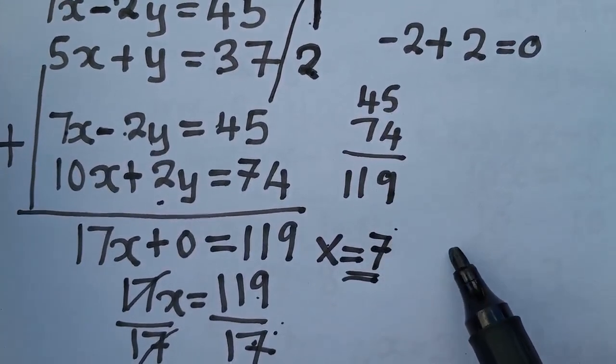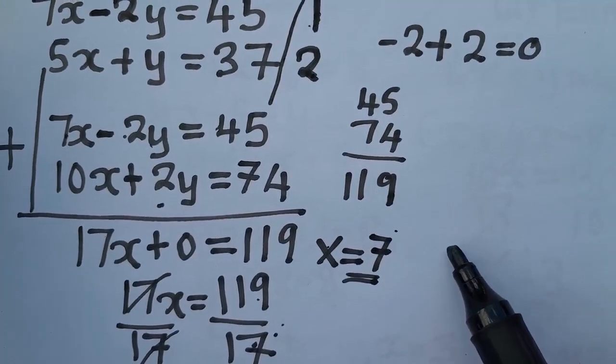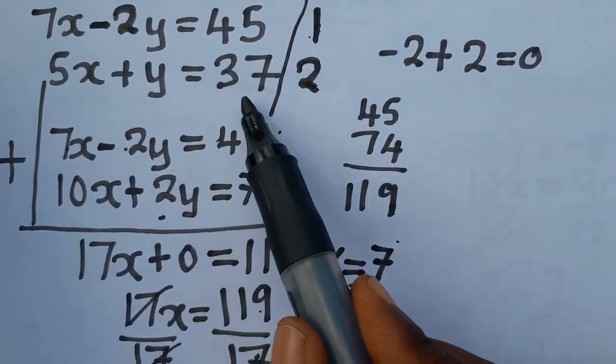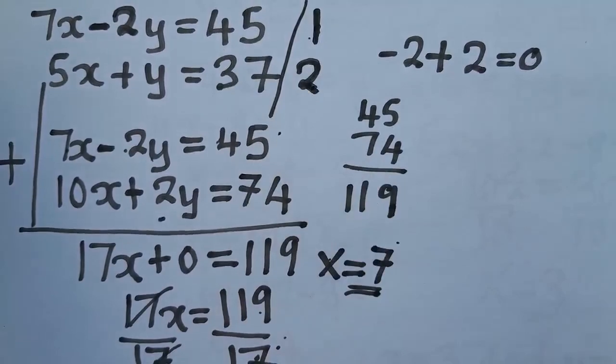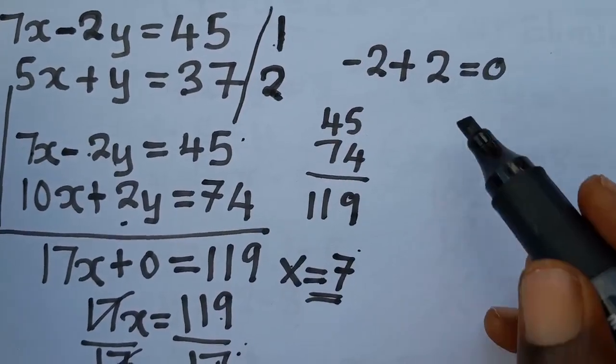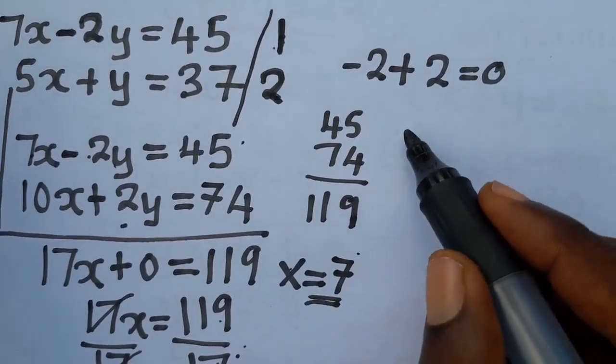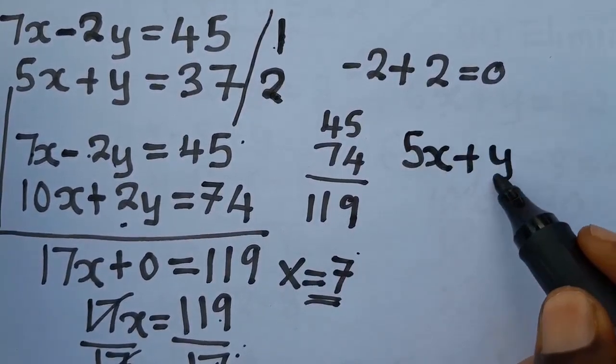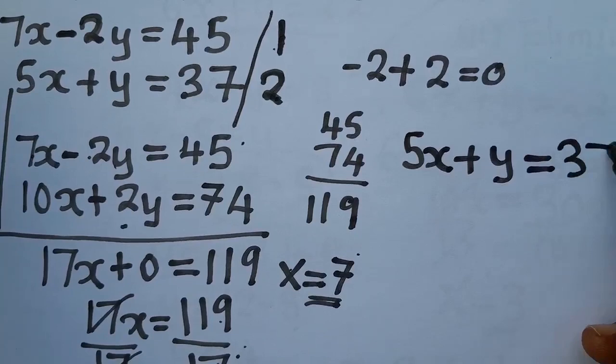How do you find another value, which is the value for y? You get one of the two equations. The original equations, you get one of the two equations. I'm going to get this one, which is 5x plus y is equal to 37.